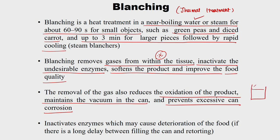Removing gas reduces further oxidation and prevents excessive can corrosion — if gases are left inside, there is room for corrosion. Blanching also inactivates enzymes that cause deterioration. For example, if we fill the can and there is a time lag before retorting, blanching helps inactivate enzymes that would otherwise spoil the food during that period. So blanching serves multiple purposes: preventing oxidation, maintaining vacuum, preventing corrosion, and inactivating deteriorative enzymes.